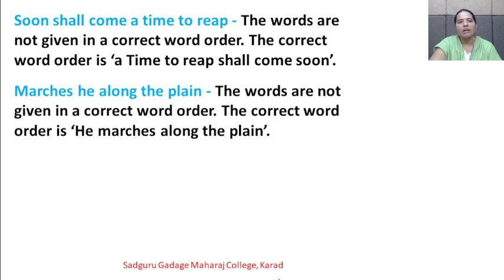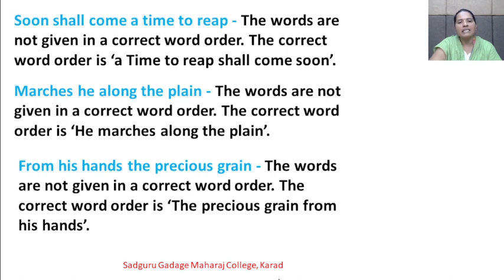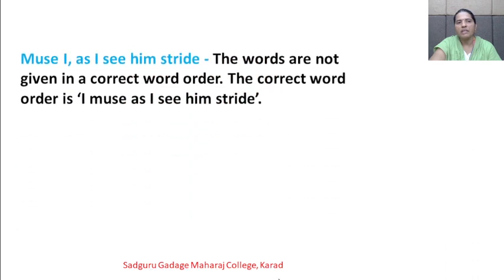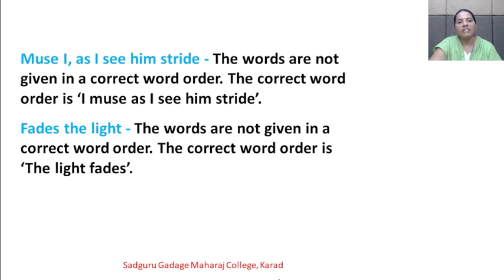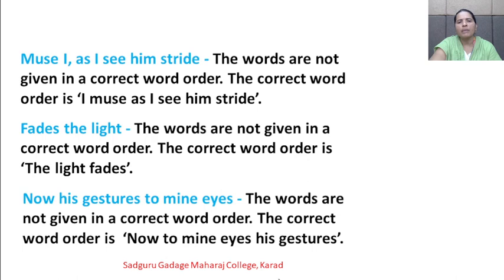Next inversion examples: 'Marches he along the plain' — correct order is 'he marches along the plain'. 'From his hands the precious grain' — correct order is 'the precious grain from his hands'. 'Muse I as I see him stride' — correct order is 'I muse as I see him stride'. 'Fades the light' — correct order is 'the light fades'. 'Now his gestures to mine eyes' — correct order is 'now to mine eyes his gestures'.